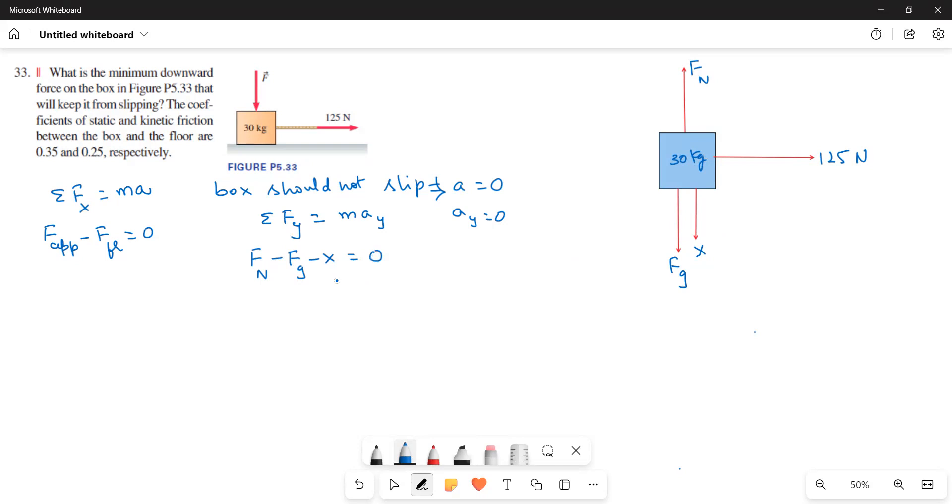We have to find out X. Now, for that first I will write FN. FN is equal to FG plus X.